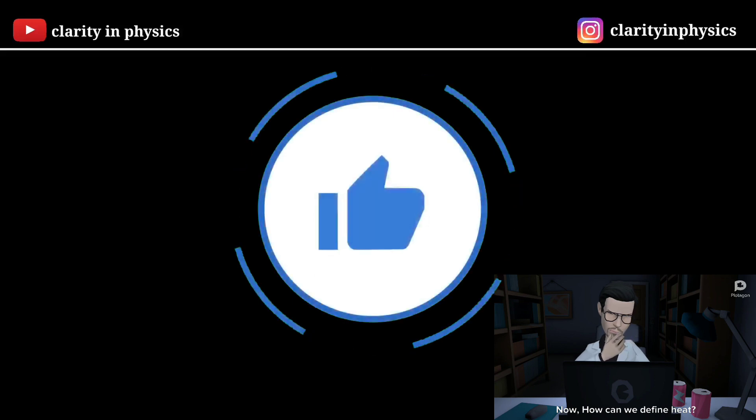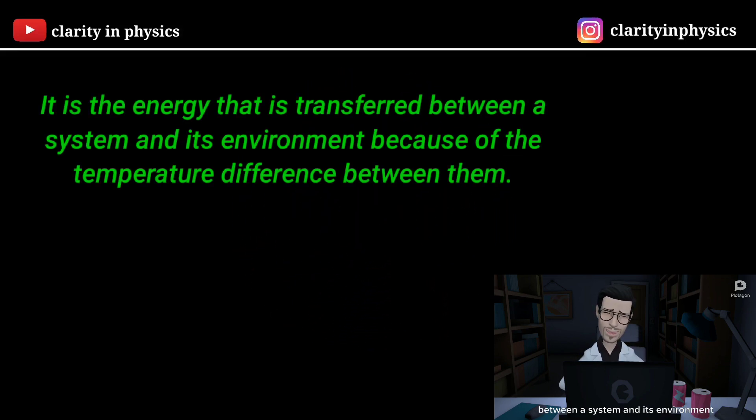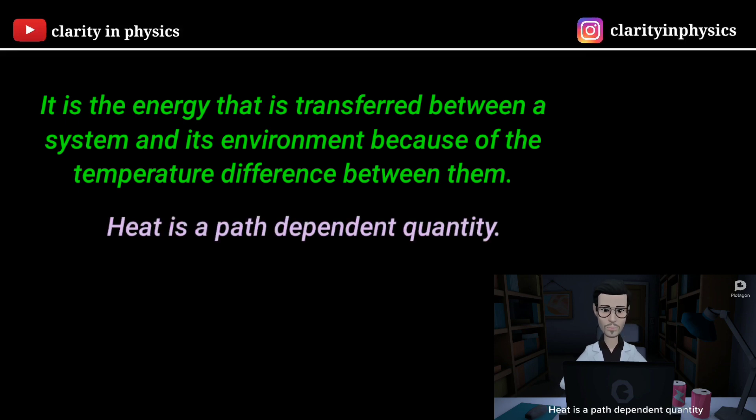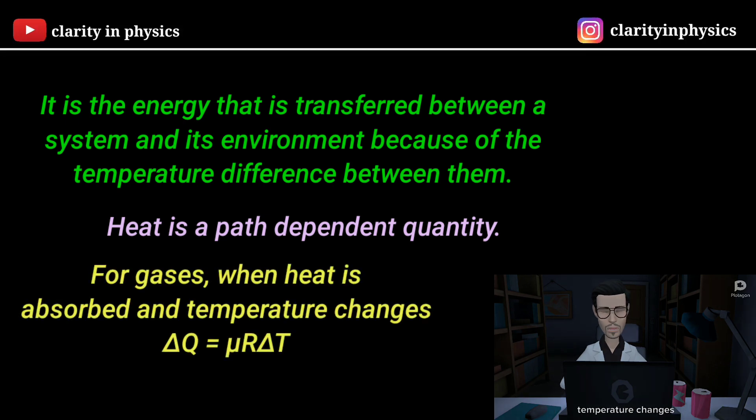How can we define heat? It is the energy that is transferred between a system and its environment because of the temperature difference between them. Heat is a path dependent quantity. For gases when heat is absorbed and temperature changes.